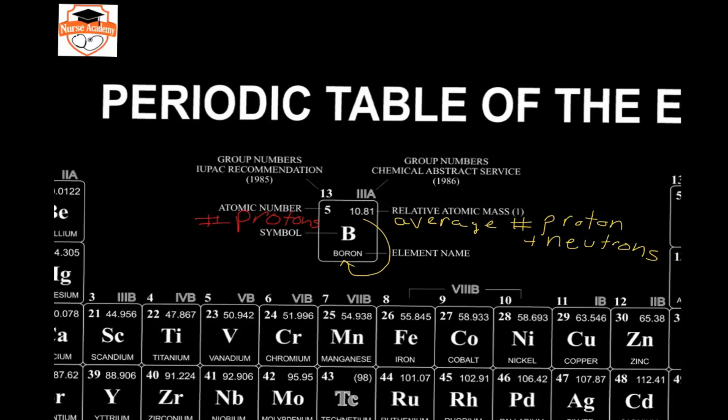As we discussed in the atomic structure video, an isotope is an atom of an element that has different numbers of neutrons. For boron, the majority of boron atoms would be boron-11, so they would have five protons and six neutrons. Then there would be a population of approximately 20% that would be boron-10, with five protons and five neutrons.